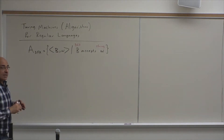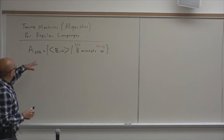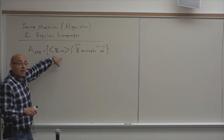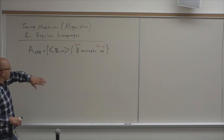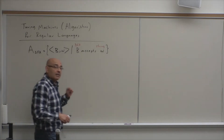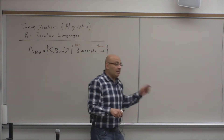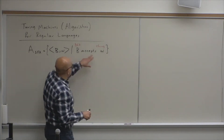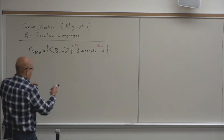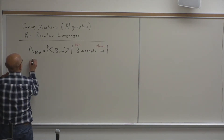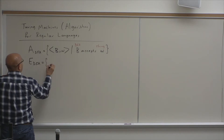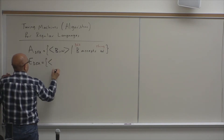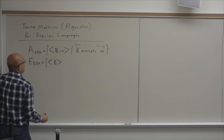How do we construct a Turing machine or an algorithm for this? The idea is just to simulate the DFA. If the DFA accepts W, accept; otherwise reject. We also talked about E_DFA, which checks if the language of a given DFA is empty.